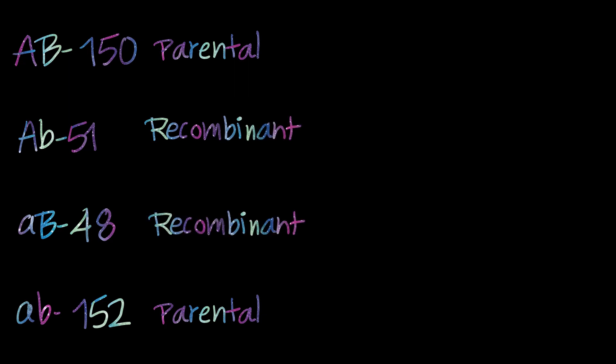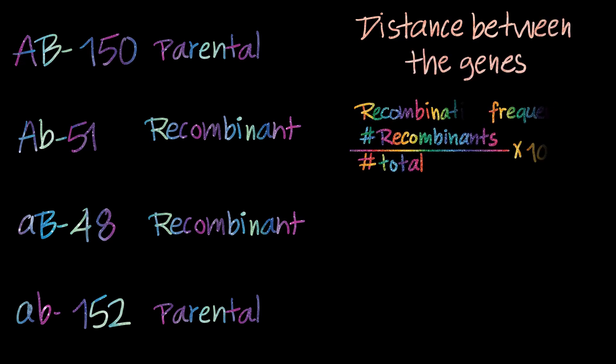We can now find the distance between the genes A and B. The recombination frequency is directly proportional to the gene distance and it is the total number of recombinant offsprings upon the total number of offsprings into 100.